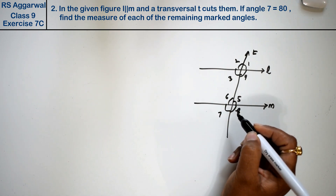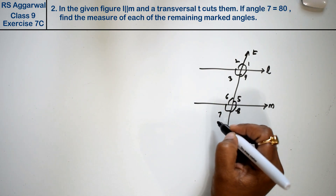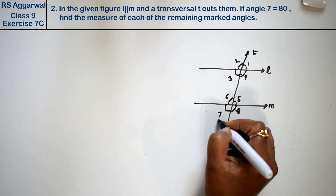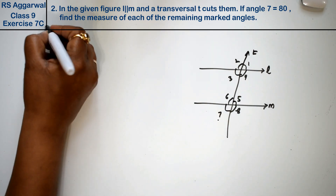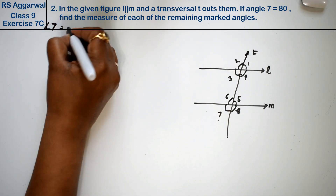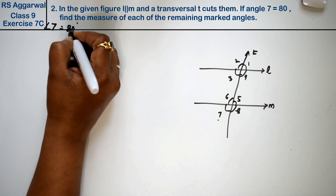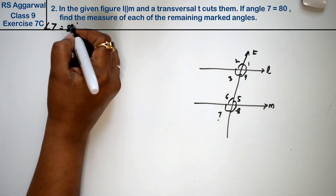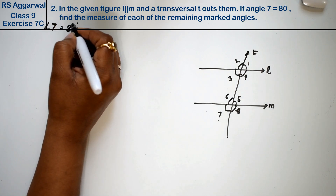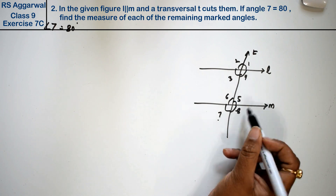What we are saying? If angle 7 is 80 degrees, find the measurement of each of the remaining marked angles.